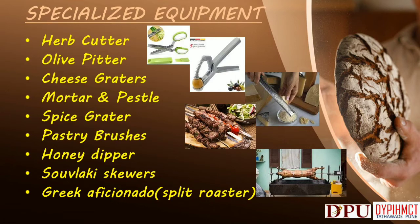Pastry Brushes — phyllo dough is a popular wrapping for meats, fruits and cheeses; to keep the dough moist, butter or olive oil is brushed across it. Honey Dipper — Greek pastries and desserts are often drizzled with honey; the honey dipper utensil drips honey slowly without adding too much or spilling. Souvlaki Skewers — meat skewers made of steel or wood used for skewering meat. Greek Aficionado — a spit roaster used by Greek butchers for roasting whole lamb or goat. Coffee Pot or Briki — a metal pot, traditionally made from copper, with a long handle used on the stovetop to make thick, rich Greek coffee.